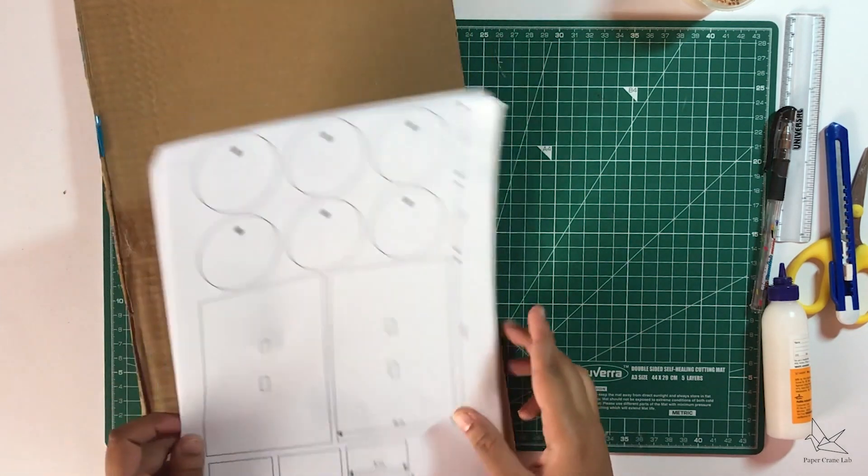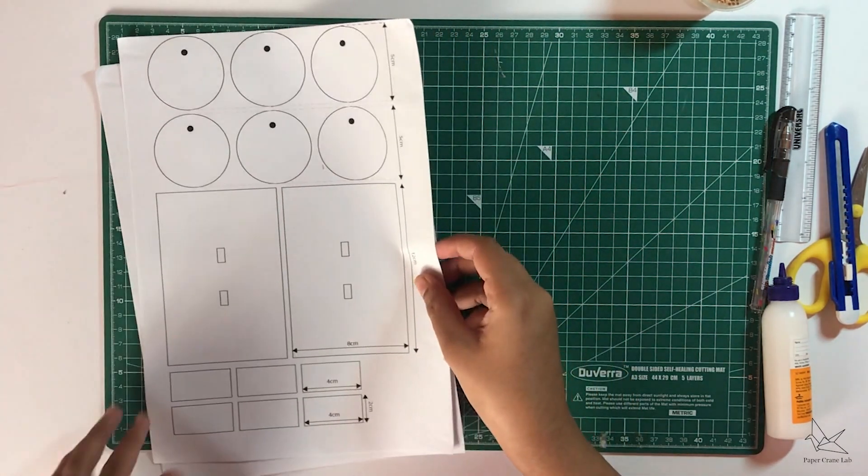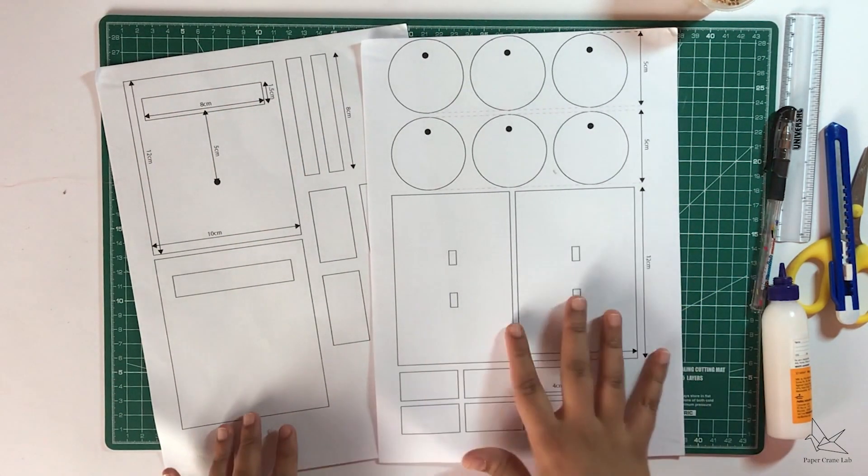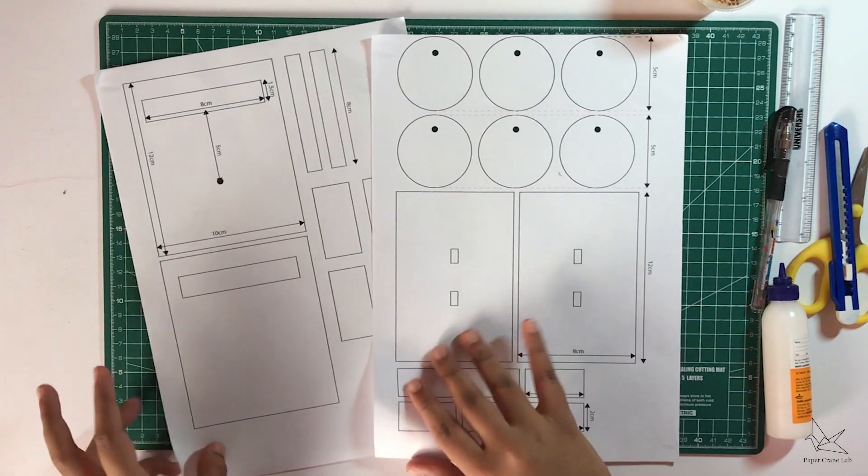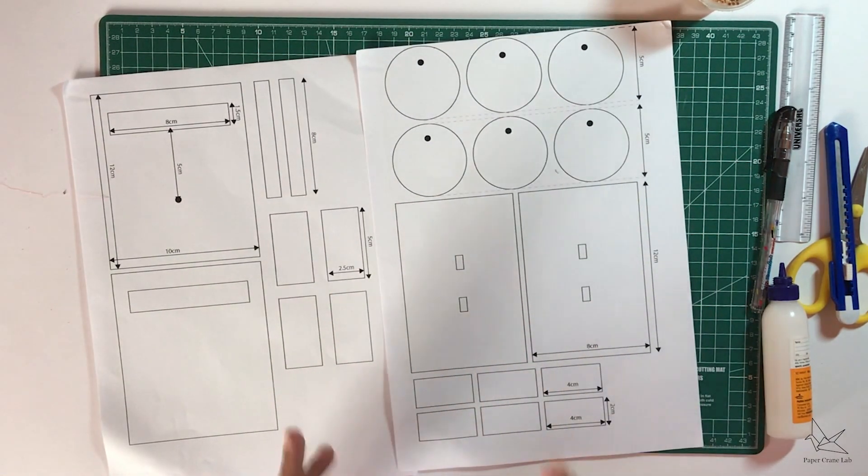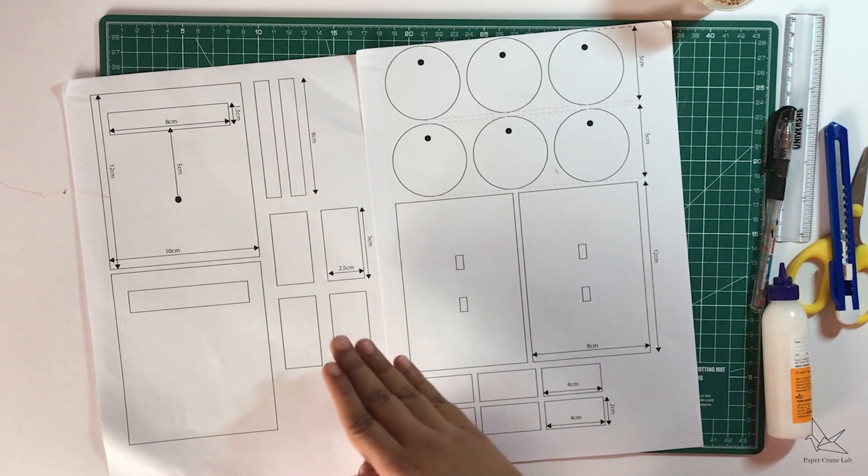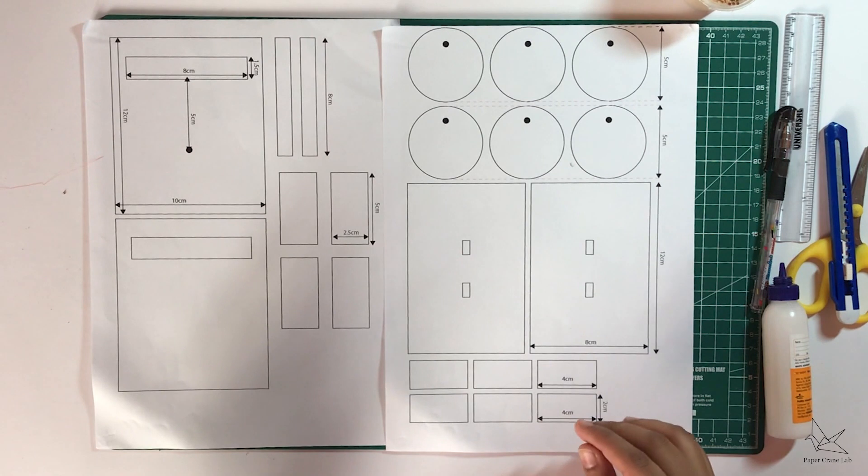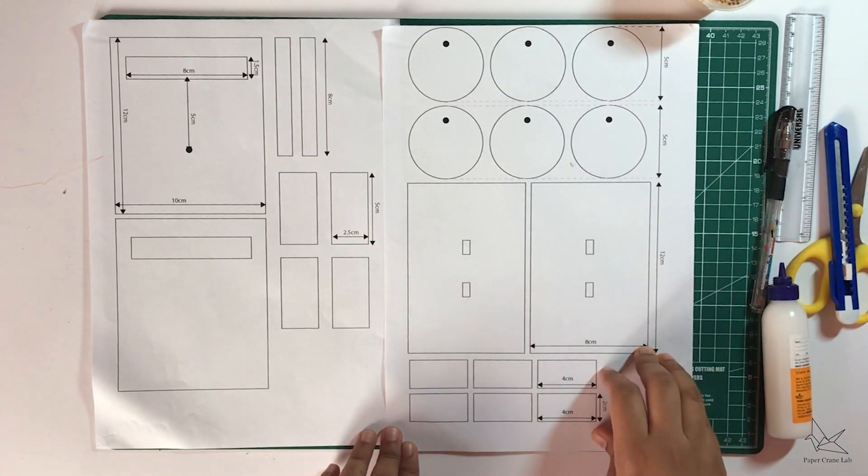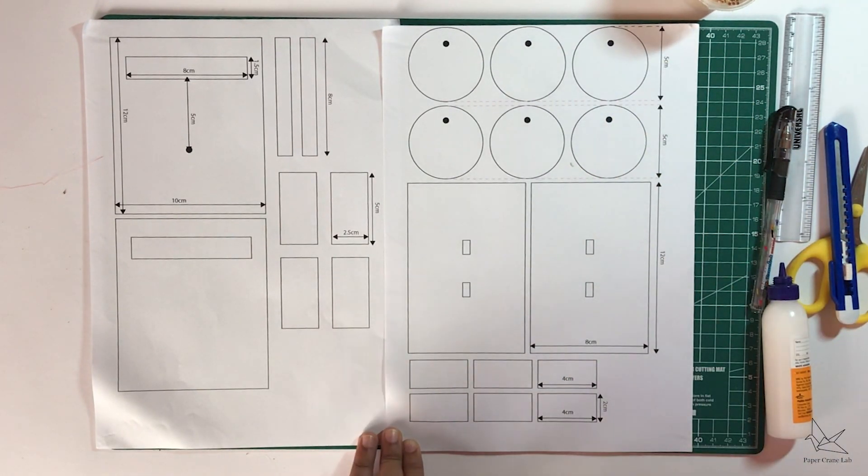Apart from this, there are templates attached in the description below that look like this. These are basically all the shapes that we will have to be cutting out for this mechanism. You can either print this out, stick it on your cardboard and cut it, or you can draw it out on the cardboard using the given measurements and cut it directly.